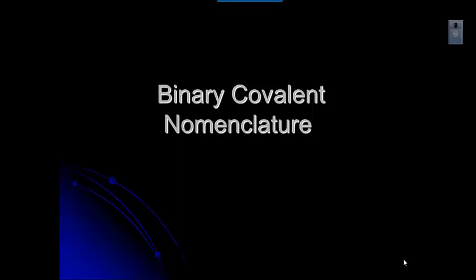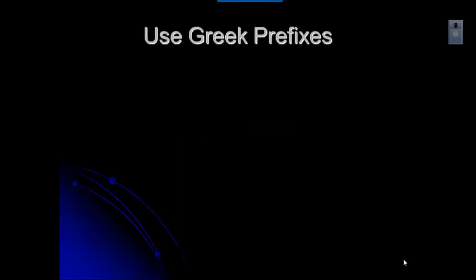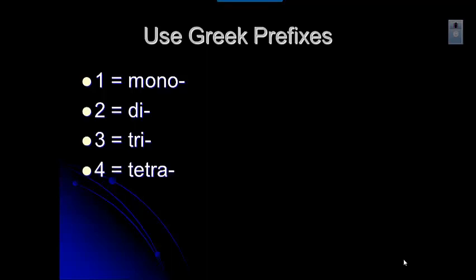Now, when you get to this section of nomenclature, I know ionic is really challenging. Covalent is pretty straightforward. So let's go through the rules. First of all, we're going to use some Greek prefixes. You may be familiar with some of these. For one, we use mono. For two, we use di. For three, we use tri. For four, tetra.